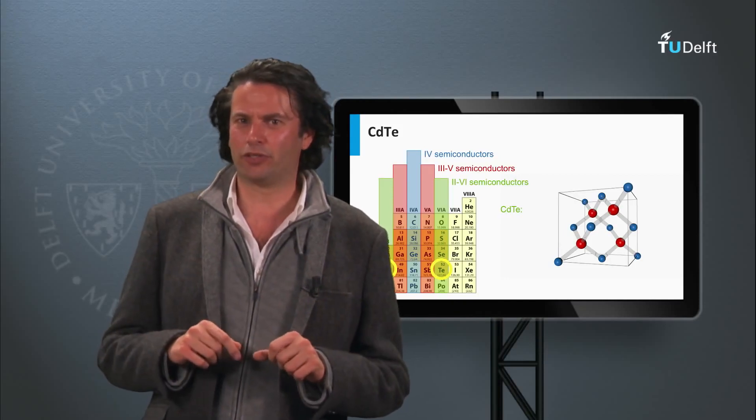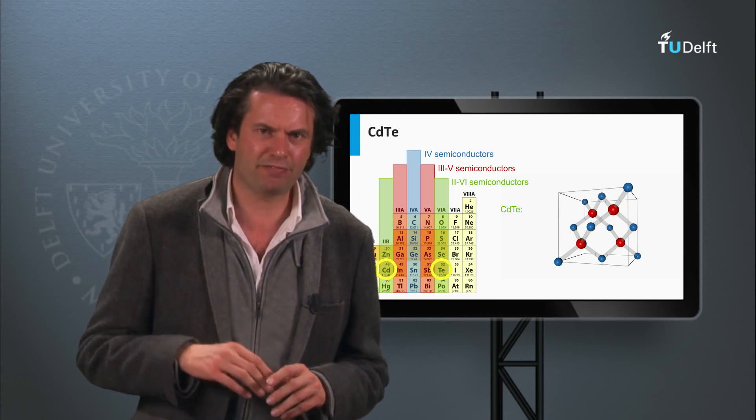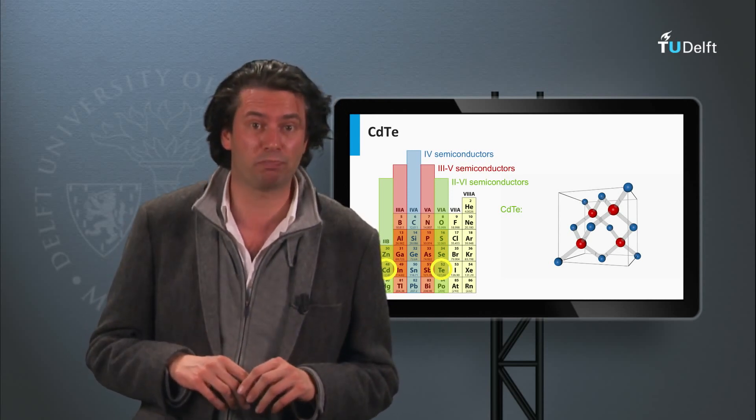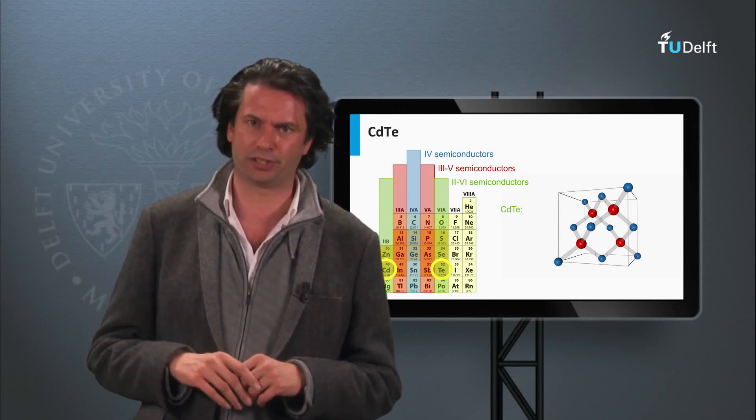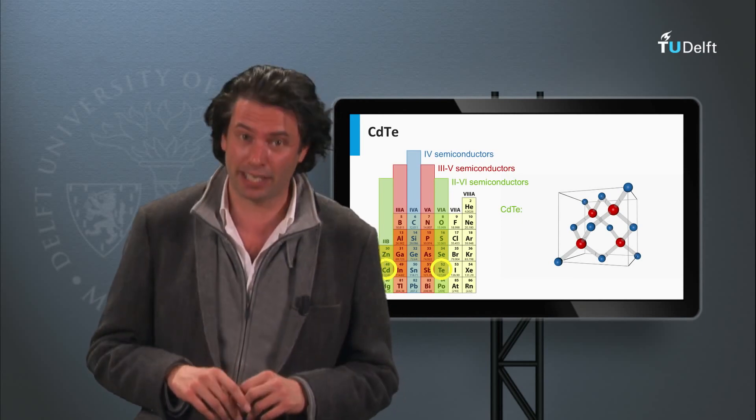A third thin film technology we will discuss is cadmium telluride. This thin film technology has currently demonstrated the lowest cost price per watt peak among all PV technologies. Let's start with the physical properties of cadmium telluride.